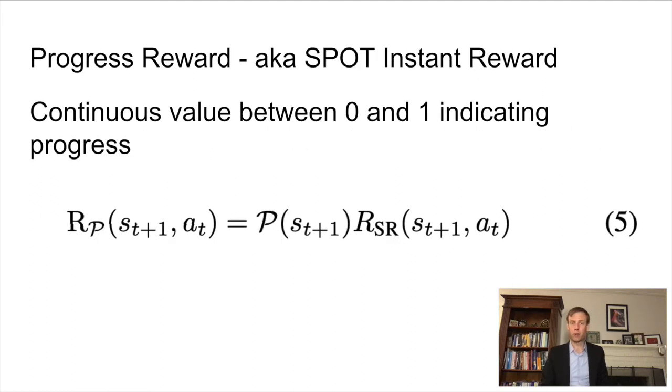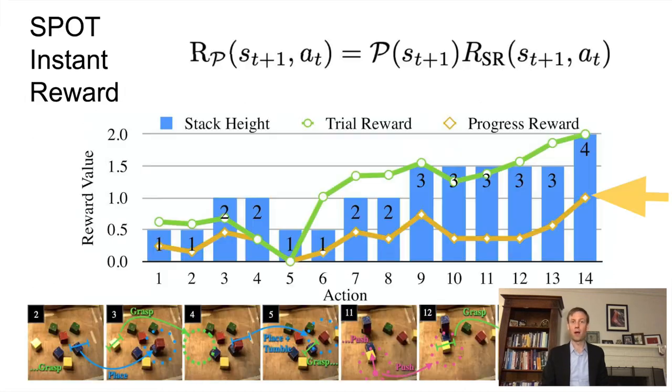After that comes the progress reward, which multiplies the situation removal reward by the continuous progress state. All together, these form what we call the SPOT instant reward. Now let's go over some of its useful properties.